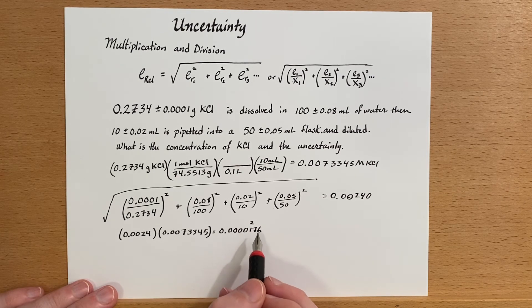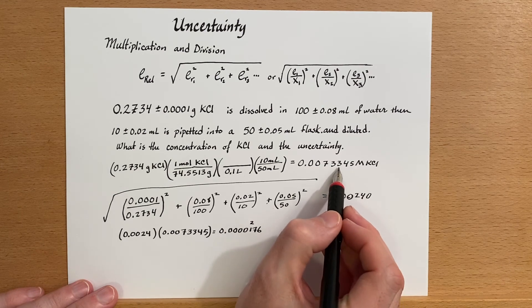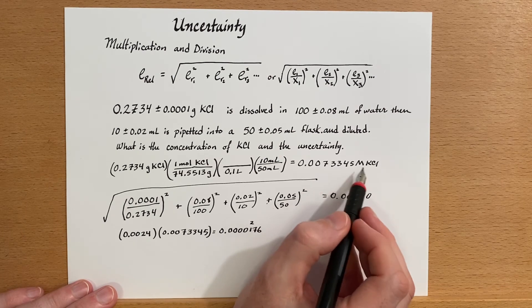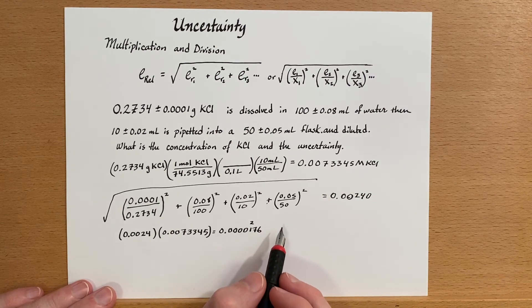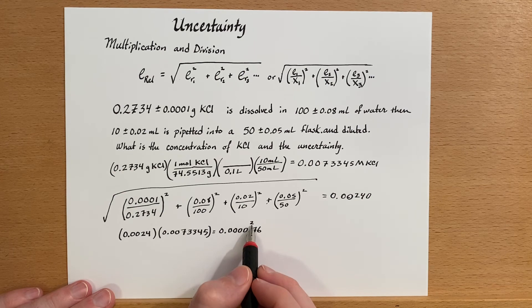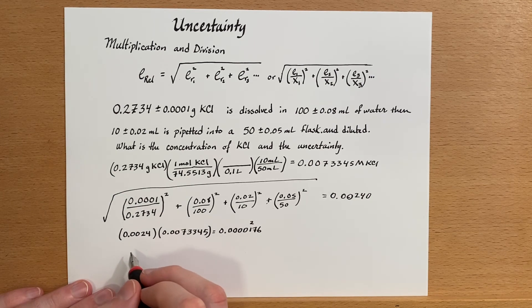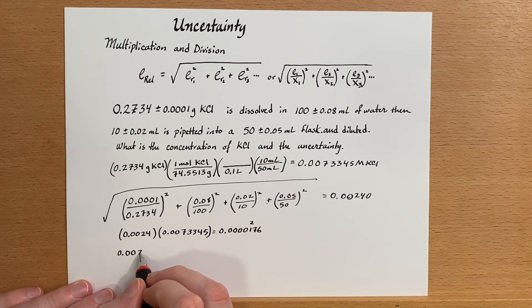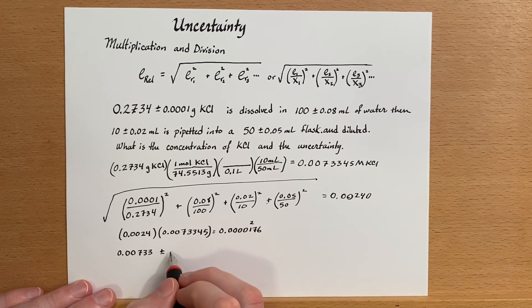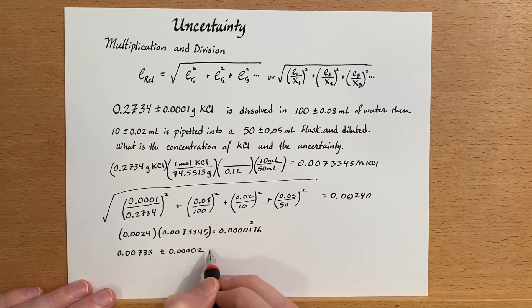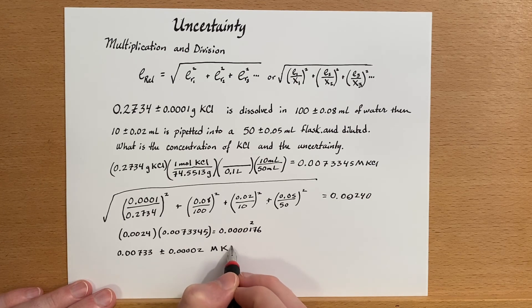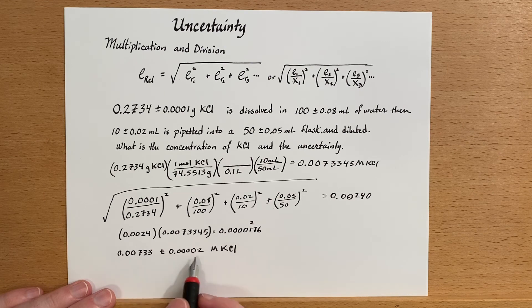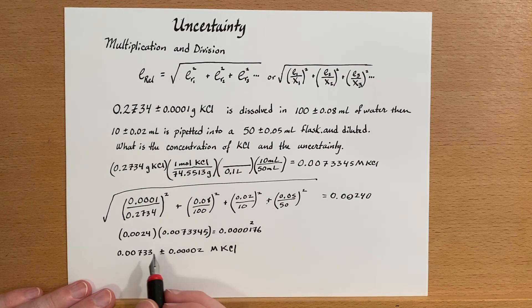And so I'm only going to report my concentration to that same digit up here, which is the fifth one. So I'm going to round this number off to this digit, because these other ones beyond that one are starting to become insignificant, because now I have variability starting here. So let's look here, 0.00733 plus or minus 0.00002, and this is molar KCl. So I stop writing significant digits once the error, once I've gotten to a digit that I'm not certain about. There's no point in writing additional ones.